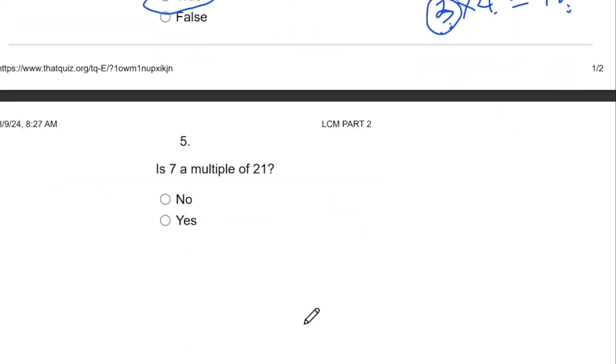Question 5: Is 7 a multiple of 21? The answer is no. 7 is a factor of 21, while 21 is a multiple of 7. 7 can divide 21, which makes it a factor. But 21 is a multiple of 7 because 7 times 3 gives us 21.